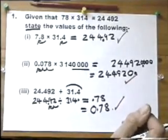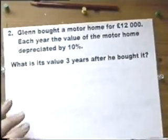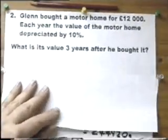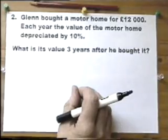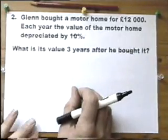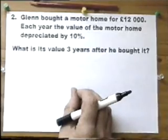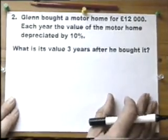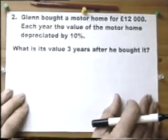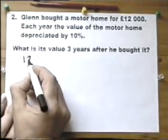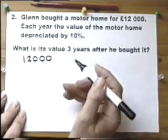Question two. In most cases, I've tried to get all the information on the sheet I'm working on. The question says Glenn bought a motorhome for £12,000. Each year, the value of the motorhome depreciated by 10%. What's the value three years after he bought it? Non-calculator paper. You can do this different ways. I'll use the 10% in my head and show all my working out.